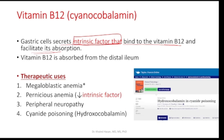Therapeutic uses of cyanocobalamin or vitamin B12 include: megaloblastic anemia, pernicious anemia due to decreased secretion of intrinsic factors, peripheral neuropathy — as patients suffer from tingling and numbness — and cyanide poisoning, where cyanocobalamin or hydroxycobalamin may be the treatment option according to medical literature.